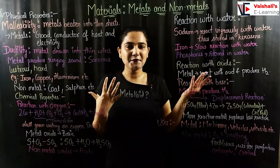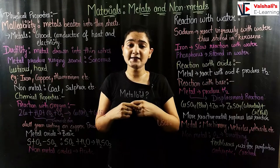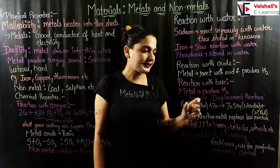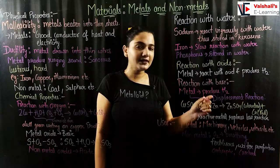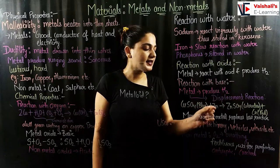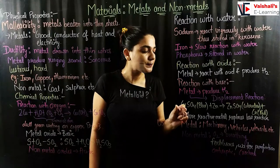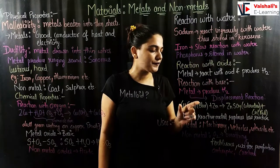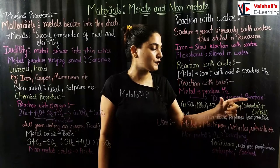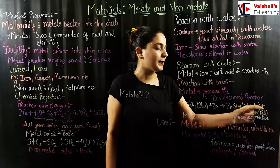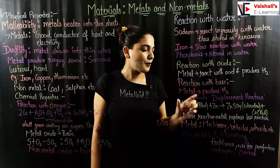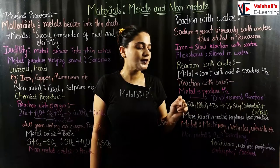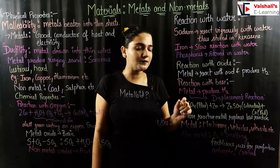Metals reacting with a base involves a complex reaction called the displacement reaction. For example, CuSO₄ (copper sulfate) is reacted with zinc. Since zinc is more reactive than copper, zinc displaces copper and forms ZnSO₄, which is colorless. So the blue-colored solution of CuSO₄ converts to a colorless solution of ZnSO₄, and we get a red precipitate of copper. A more reactive metal will always replace the less reactive one.